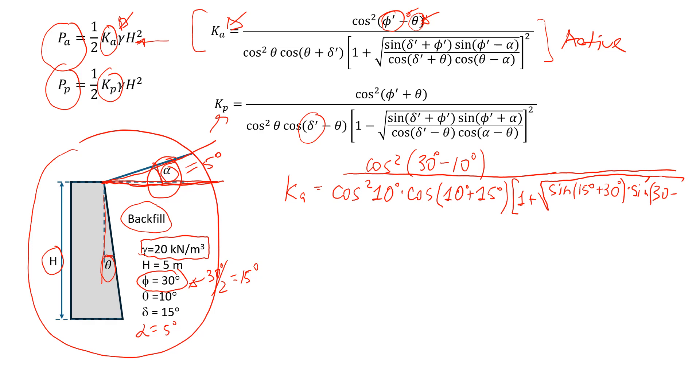So then I'm going to put here 5 degrees. And then divided by cosine, 15 plus 30 degrees here, cosine, you have theta which is 10 minus alpha 5. And that everything in the power of 2.